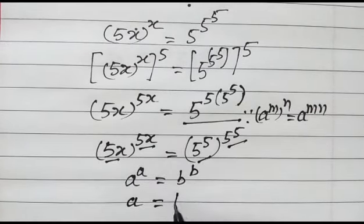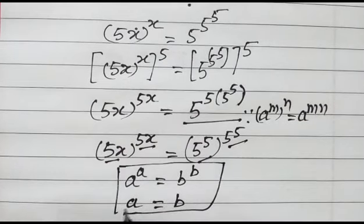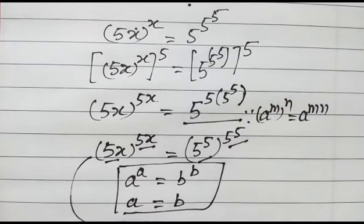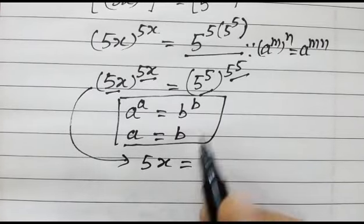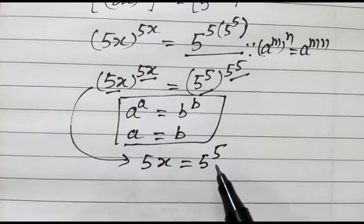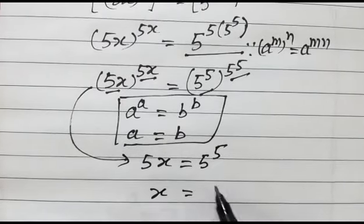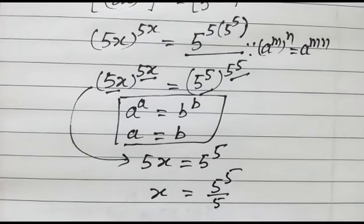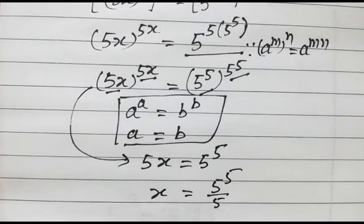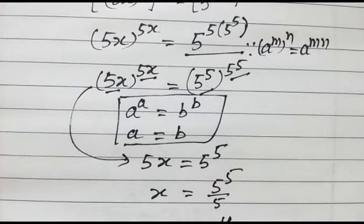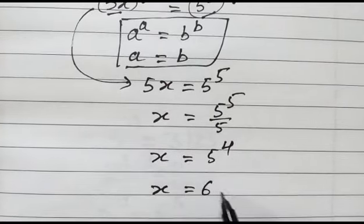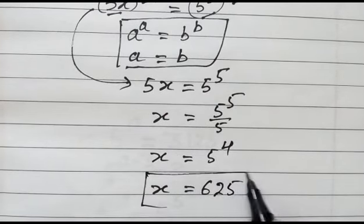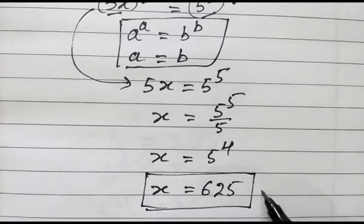So we can say 5x is equal to 5 to the power 5. Therefore x is equal to 5 to the power 5 over 5, which gives x equal to 5 to the power 4, or x equals 625. Thank you friends.